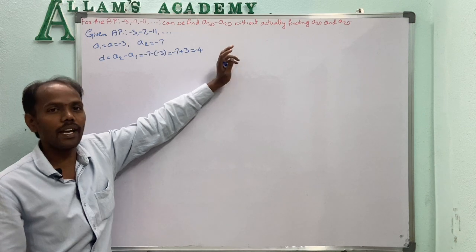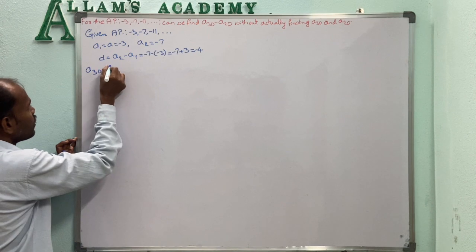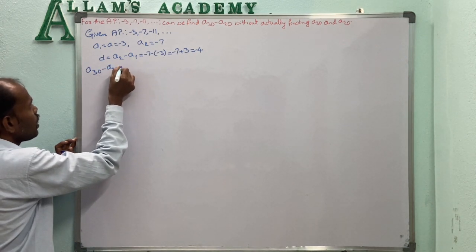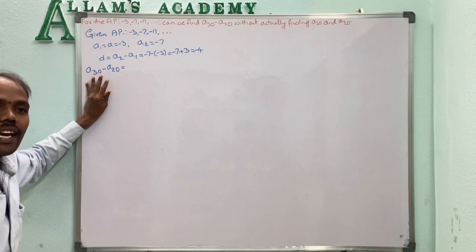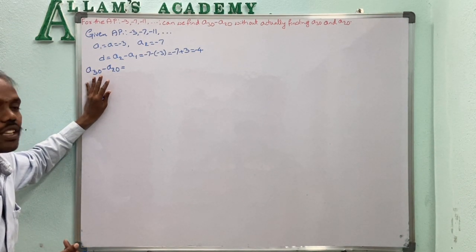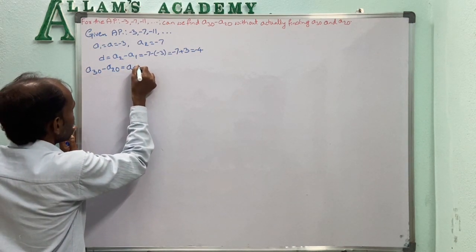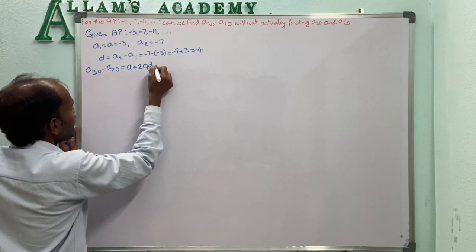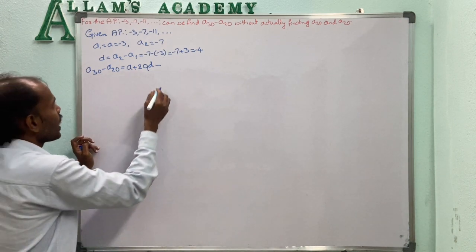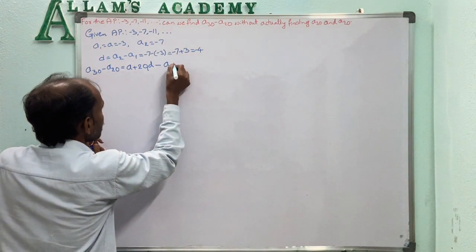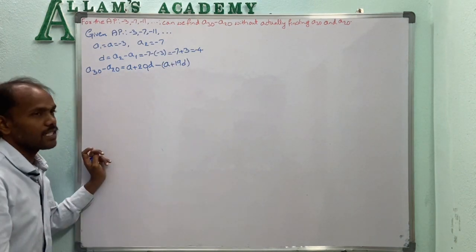Now I want to find A30 minus A20 without finding the individual values. By the general form AN = A + (N-1)D, we can write A30 = A + 29D, and A20 = A + 19D. So A30 minus A20 equals A + 29D minus (A + 19D).